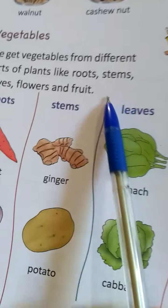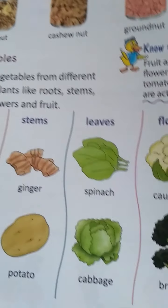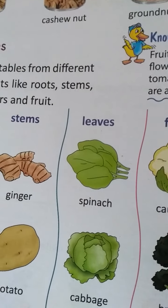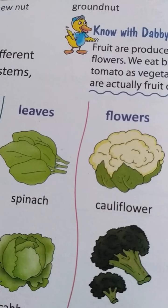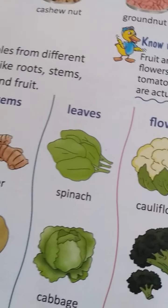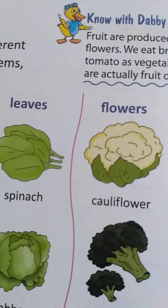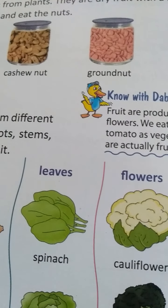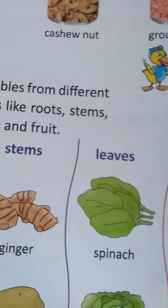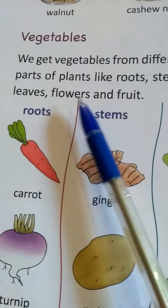Then we read about vegetables. Vegetables are very good for health. Eat plenty of green vegetables every day — like carrot, turnip, ginger, potato, tomato, brinjal, broccoli, cauliflower, and cabbage. We get vegetables from different parts of the plant, like roots, stems, leaves, flowers, and fruit.